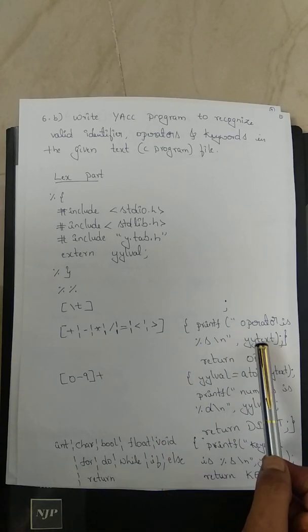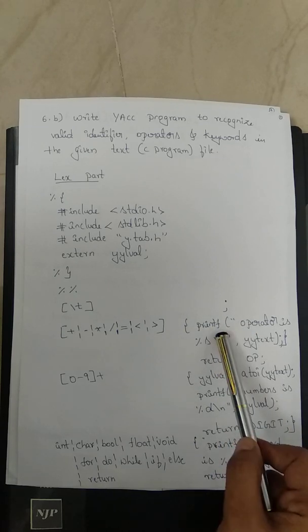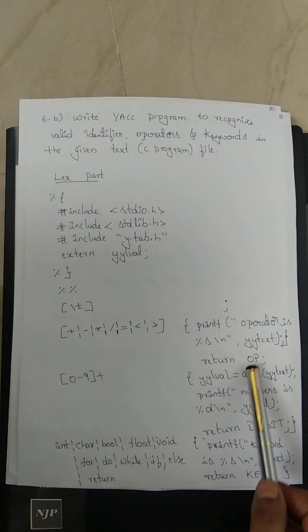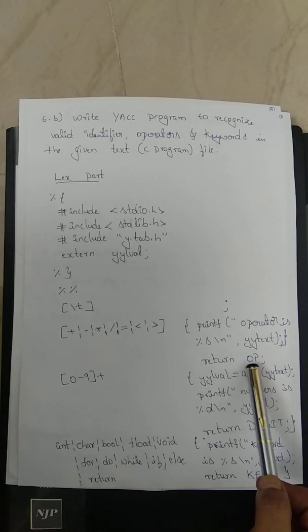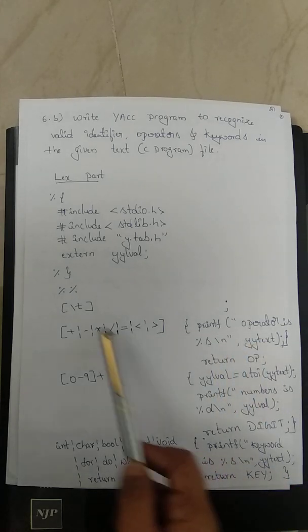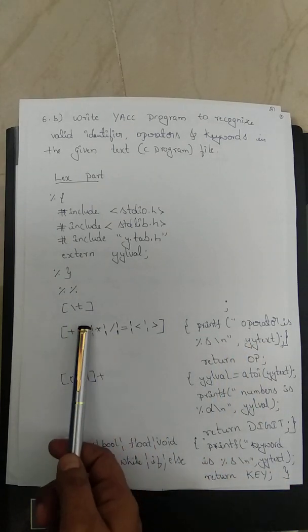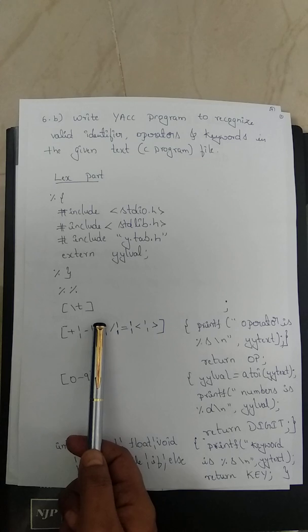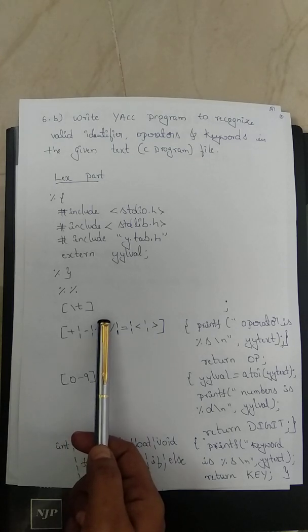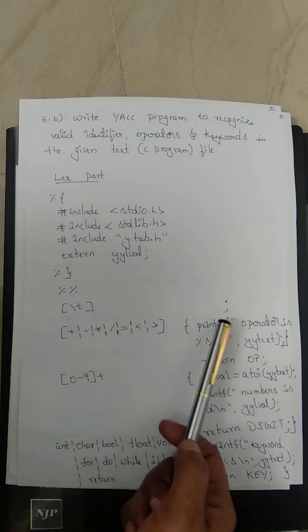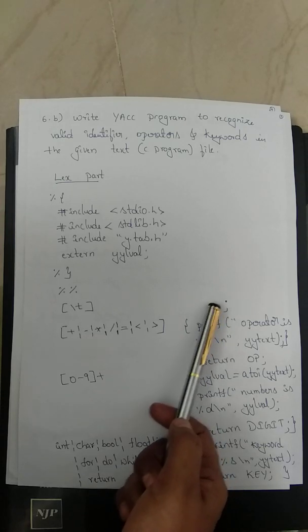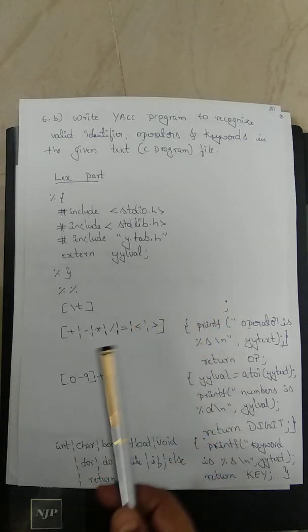The matched string is stored in yytext and printed with a printf statement. The token written to YACC is OP. Before this, \t (tab space) is handled — if any tab space is encountered in the C file, the action is to do nothing (semicolon means no action taken).